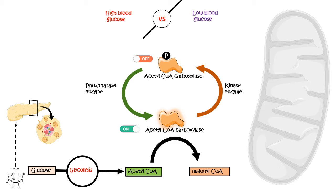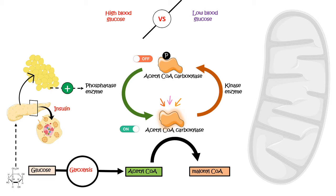When we have excess glucose, it undergoes glycolysis and also triggers secretion of insulin from the pancreatic beta cells. Insulin acts on its target tissue and activates the phosphatase enzyme, so acetyl-CoA carboxylase becomes dephosphorylated and active, thereby generating malonyl-CoA and favoring fatty acid biosynthesis. In short, in a fed state with high blood glucose, fatty acid biosynthesis is favored — unutilized glucose is converted to fat, which is why sugar makes us fat.